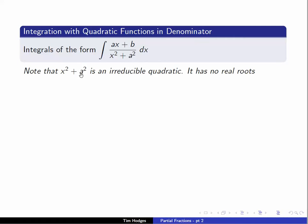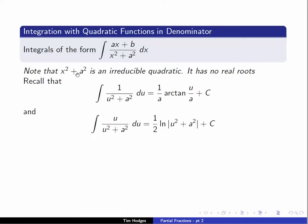Note that x squared plus a squared is an irreducible quadratic — it has no real roots because the roots are plus or minus a times i. Recall these two formulas we'll use frequently: the integral of 1 over u squared plus a squared is 1 over a arctan(u/a), and the integral of u over u squared plus a squared is one half log(u squared plus a squared). These are both easily obtained by standard integrals and substitutions.